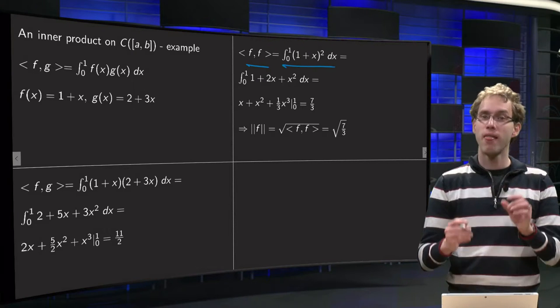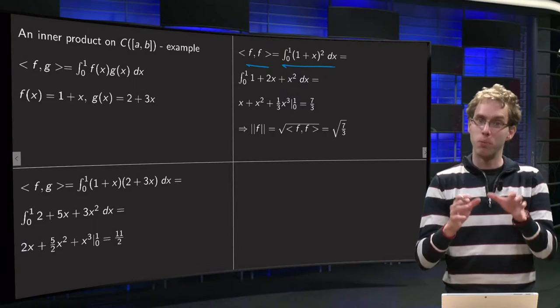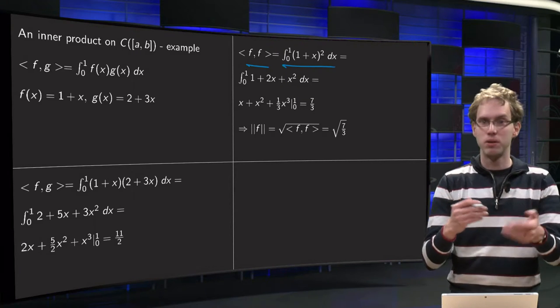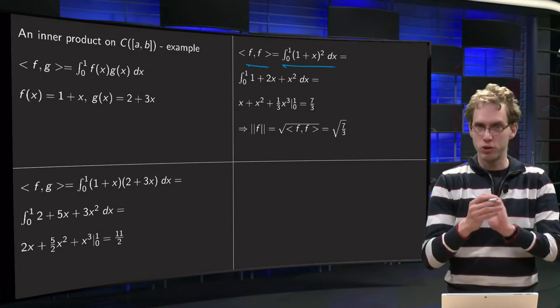So we have integral 0 to 1, 1 plus x times 1 plus x, so 1 plus x squared. Well, you can use substitution rule, but you can also just work out the bracket.